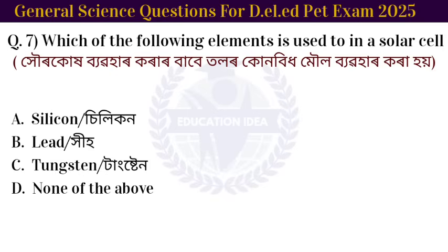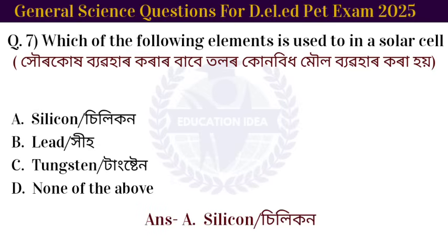Next question: which of the following elements is used in a solar cell? The answer is silicon.